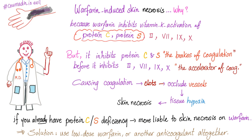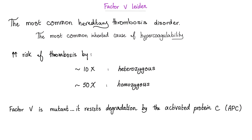If you already have protein C or protein S deficiency, you are more liable to skin necrosis on warfarin because you already have low levels and warfarin will inhibit them even more. Use low-dose warfarin or another anticoagulant to begin with. Now, Factor V Leiden — it is the most common hereditary thrombosis disorder, the most common inherited cause of hypercoagulability.